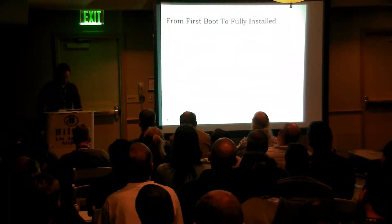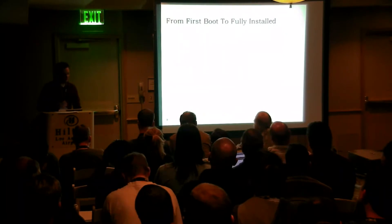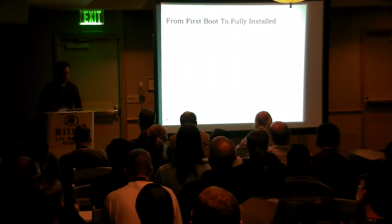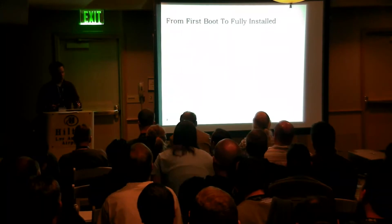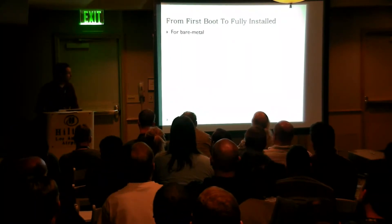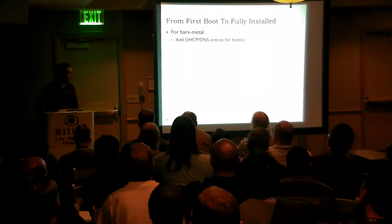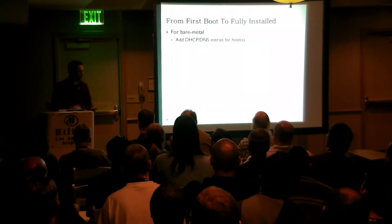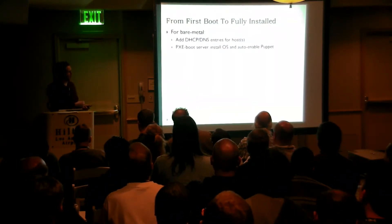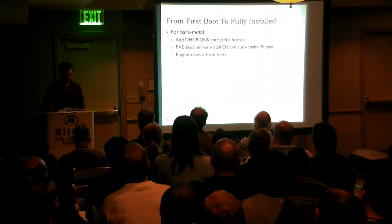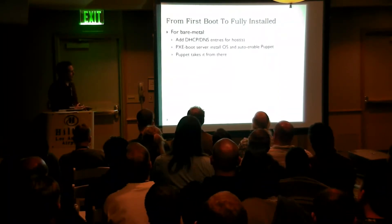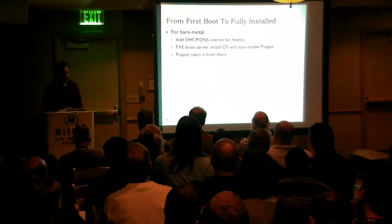Now, how do you go from a system first starting to a fully managed environment? For bare metal using this environment: add your DHCP/DNS entries before the system boots, then PXE-boot the server like normal, install the OS, and one of the install OS functions is to install Puppet. That's it — Puppet takes it from there. Puppet would contact the Puppet server, find out what classes apply to it, and take it from a bare OS to a fully managed system.